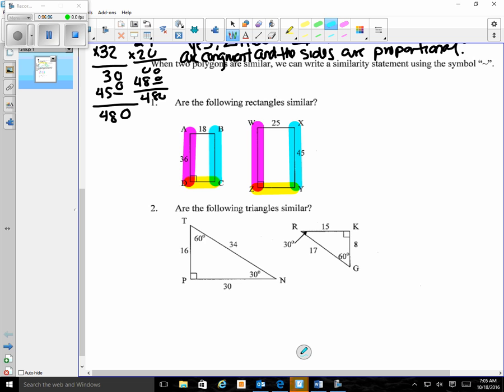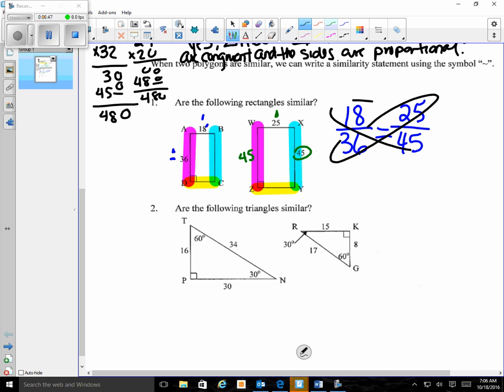So I'm going to set these up in a proportion. I'm going to use this side and this side, and I'm going to compare them to their corresponding side, which I know is 45 over here, because it is over here. And so my proportion is 18 over 36, and now I'm going to compare it to my second one, equals 25 over 45. Now I'm going to cross multiply.